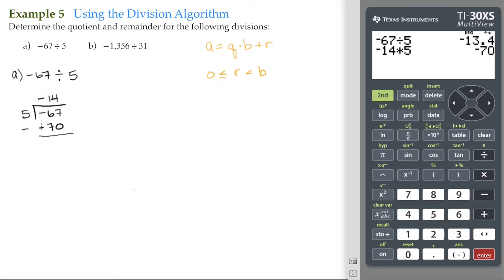Don't think that the negative attached to the result is the same as the process of subtracting it. Now we have negative 67 minus negative 70, which is the same as negative 67 plus 70. That equals 3.